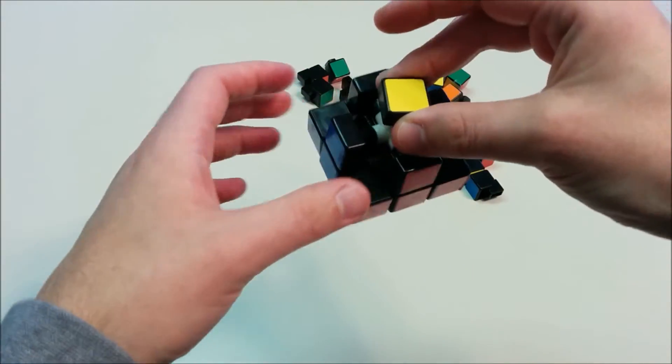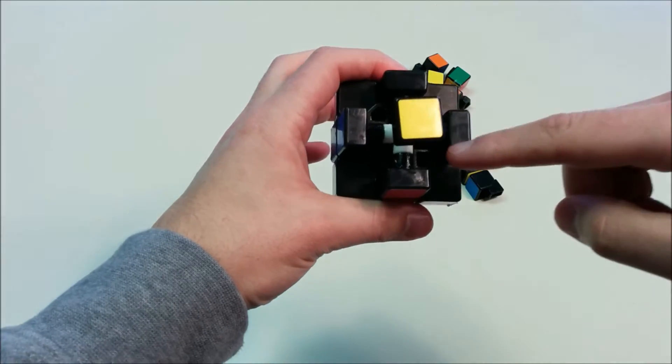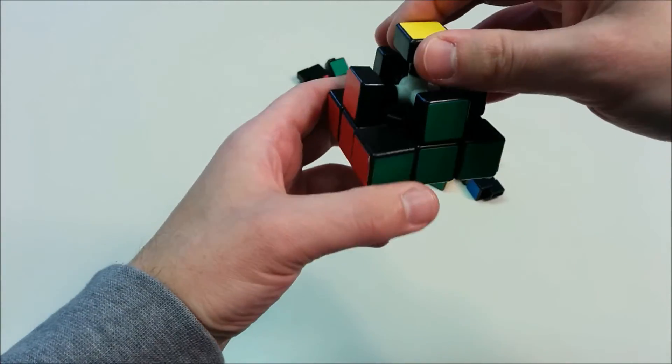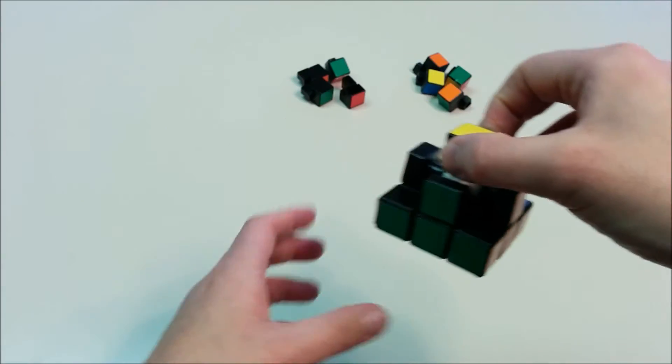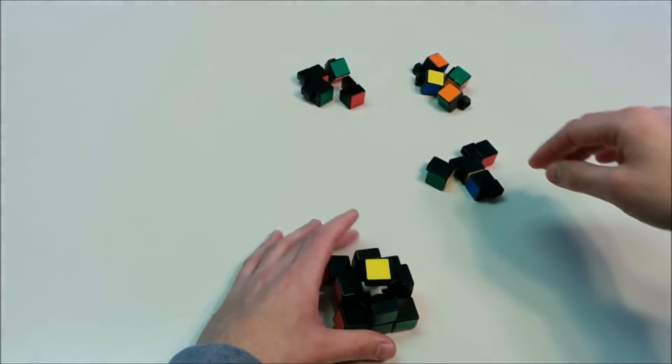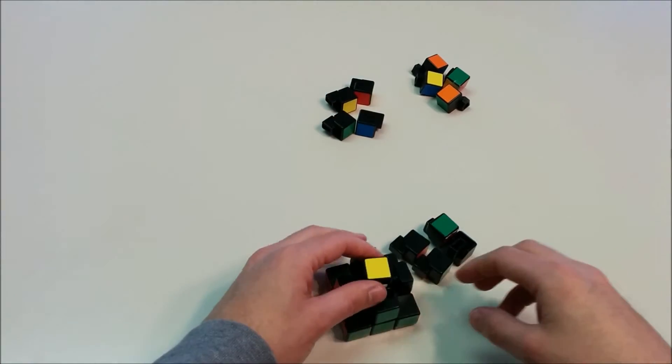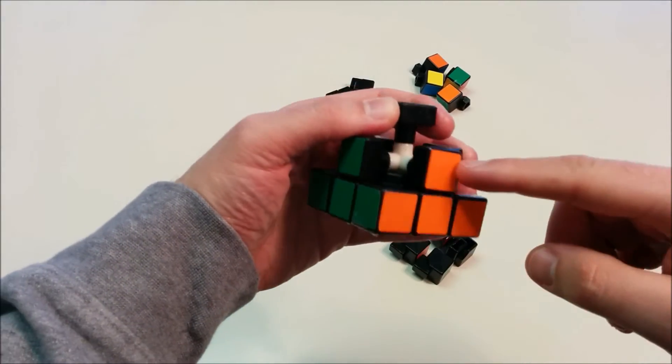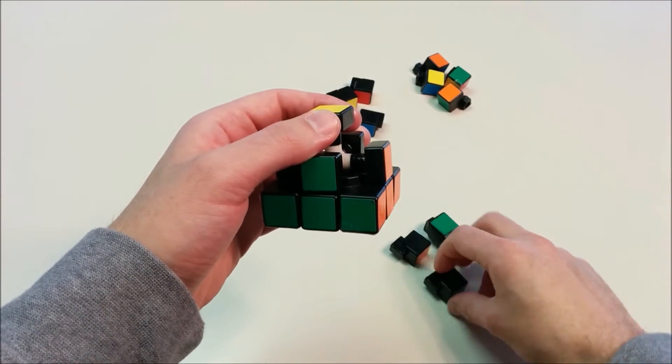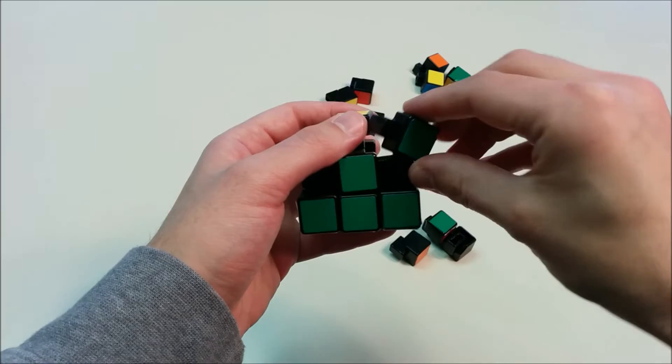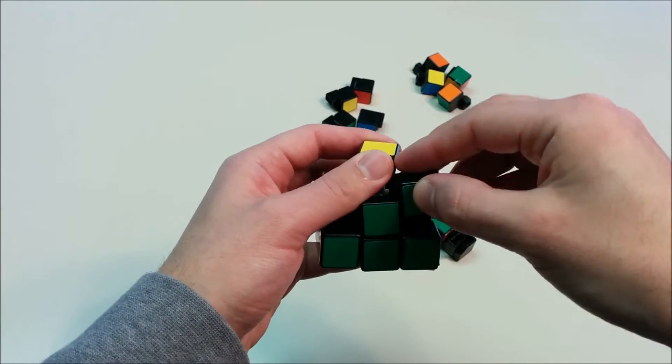The next step in the layer method will be to solve for the middle layer. So there are four pieces which have two colors each. And we're going to want to match the sides of the two colors. So we get the group of pieces. There are four of them. Here we want to match a green and orange edge piece in the middle layer. So we'll find that piece and then put it in the correct orientation.